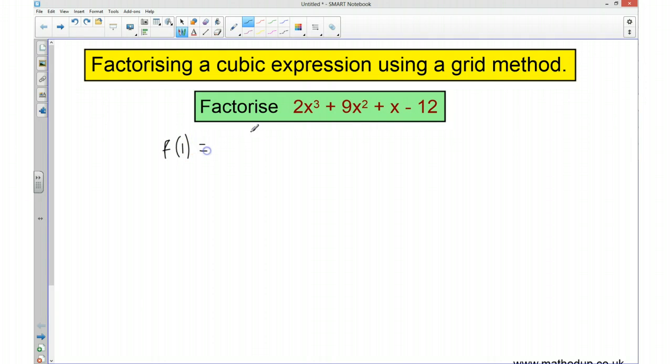So if I put in a 1, I'll get 2 times 1 cubed plus 9 times 1 squared plus 1 take away 12. And all of that, 2 plus 9 is 11 plus 1, so 12 take away 12 is 0, therefore x take away 1 is a factor.